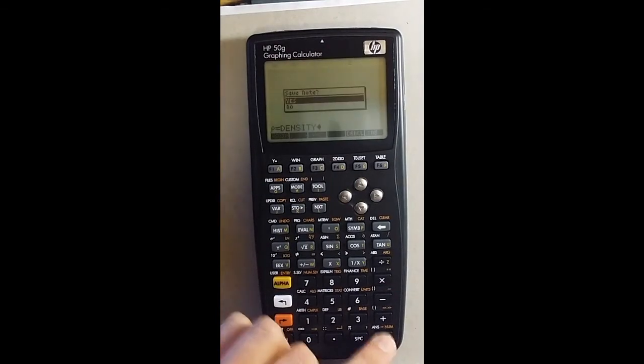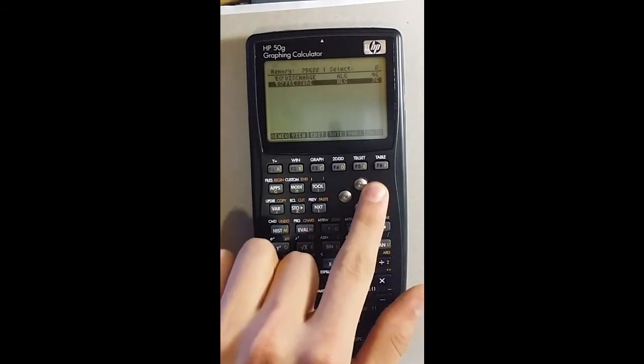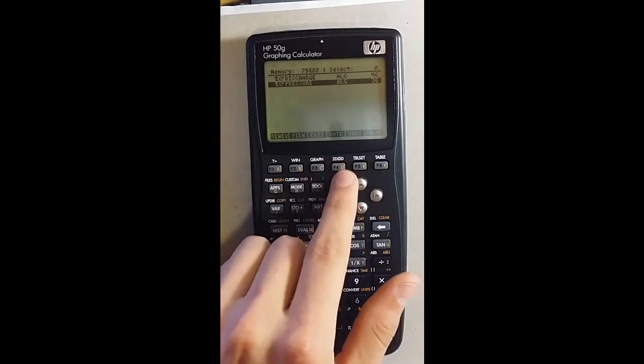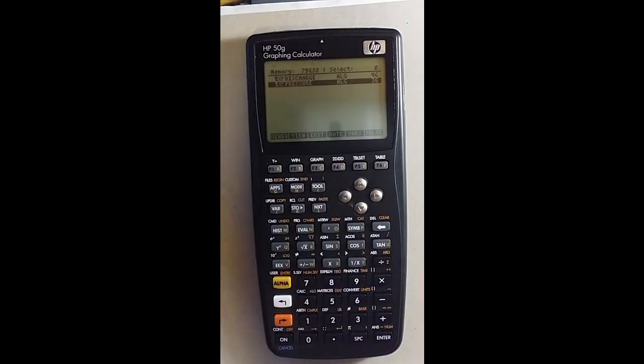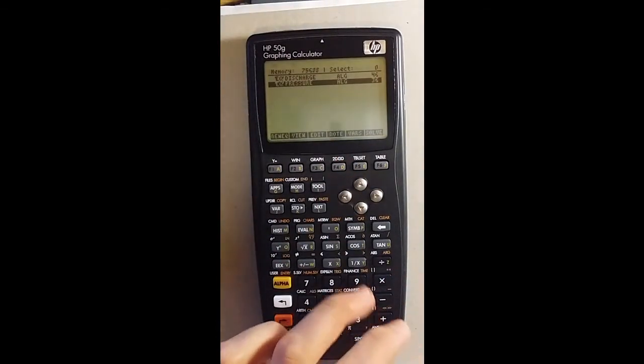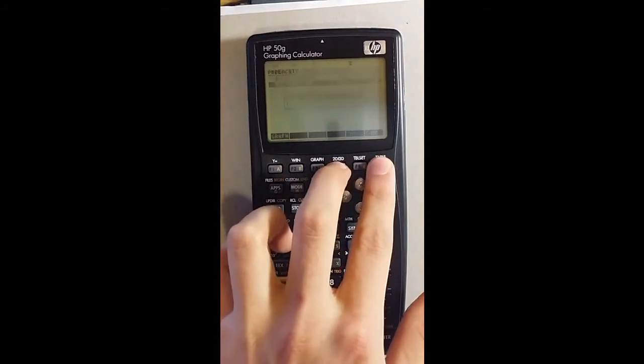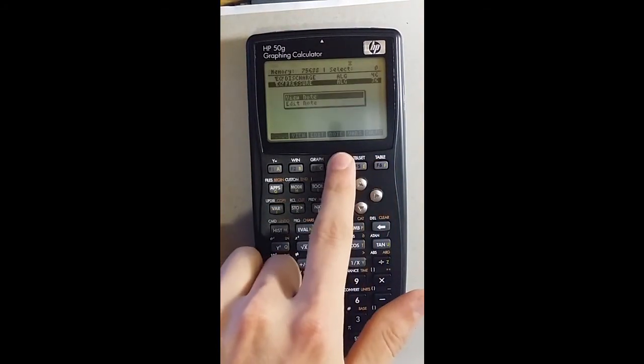Rho equals density. It asks you to save note, you say yes. This is very handy if you want to make a quick note to define variables. Also, you can view the note or edit it, you saw the edit option there, whatever you want to do.